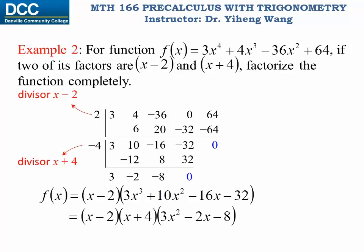So this tells us the original function equals x minus two times x plus four — the two given factors — multiplied by the quadratic factor three x squared minus two x minus eight. We can easily continue to factor this quadratic factor, either by inspection or using the quadratic formula. That gives us three x plus four multiplied by x minus two. Now the original function is written as a product of four linear factors, and that completes this problem.